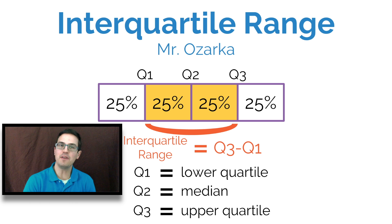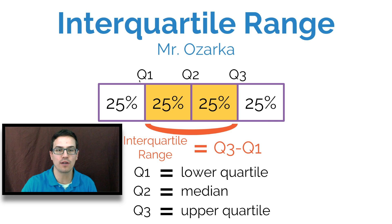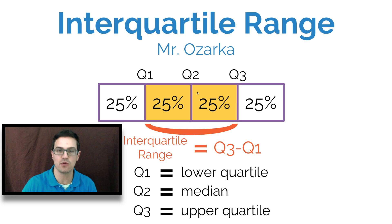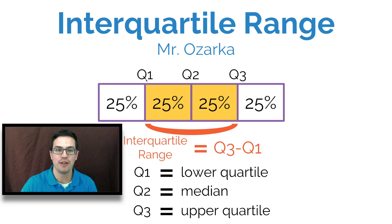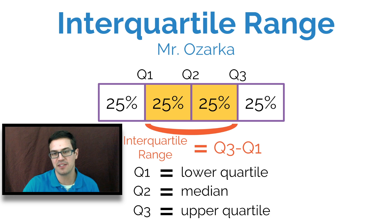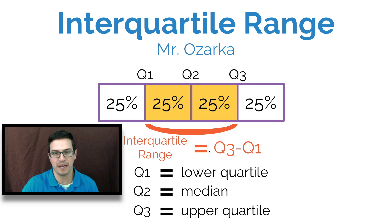This is going to be a video about interquartile range. Basically it's when you subtract the lower quartile, or Q1, from the upper quartile, which is Q3. So if you have a bunch of data and you break it up into quarters — 25%, 25%, 25%, 25% — you take the number in between the second and third quarter and subtract it from Q3, and you end up with the interquartile range: Q3 minus Q1.